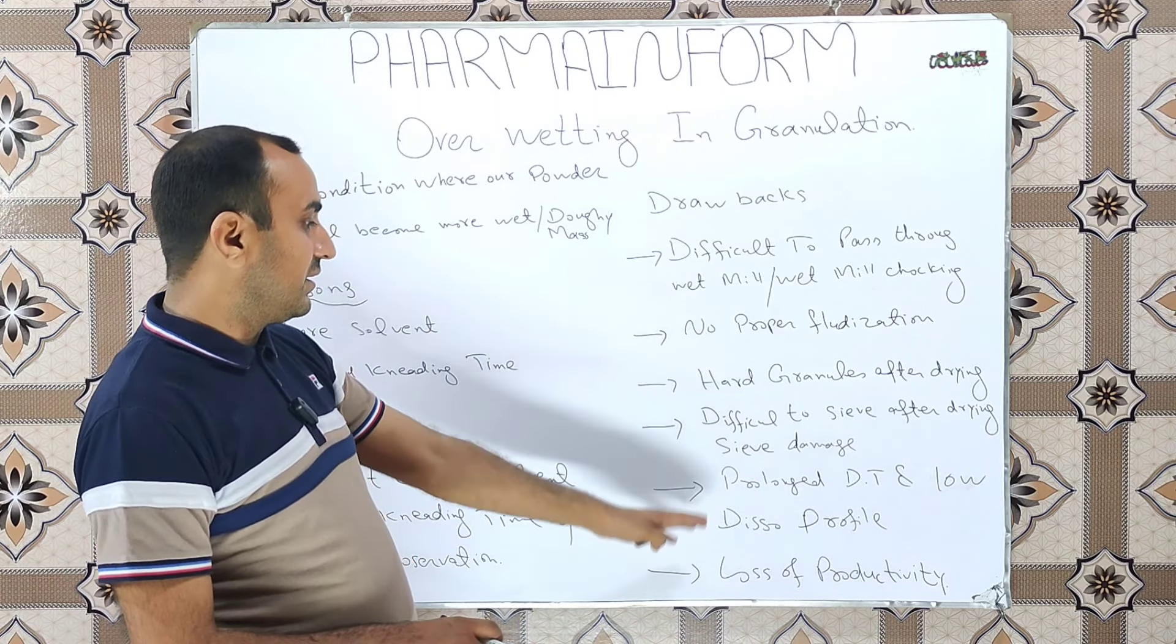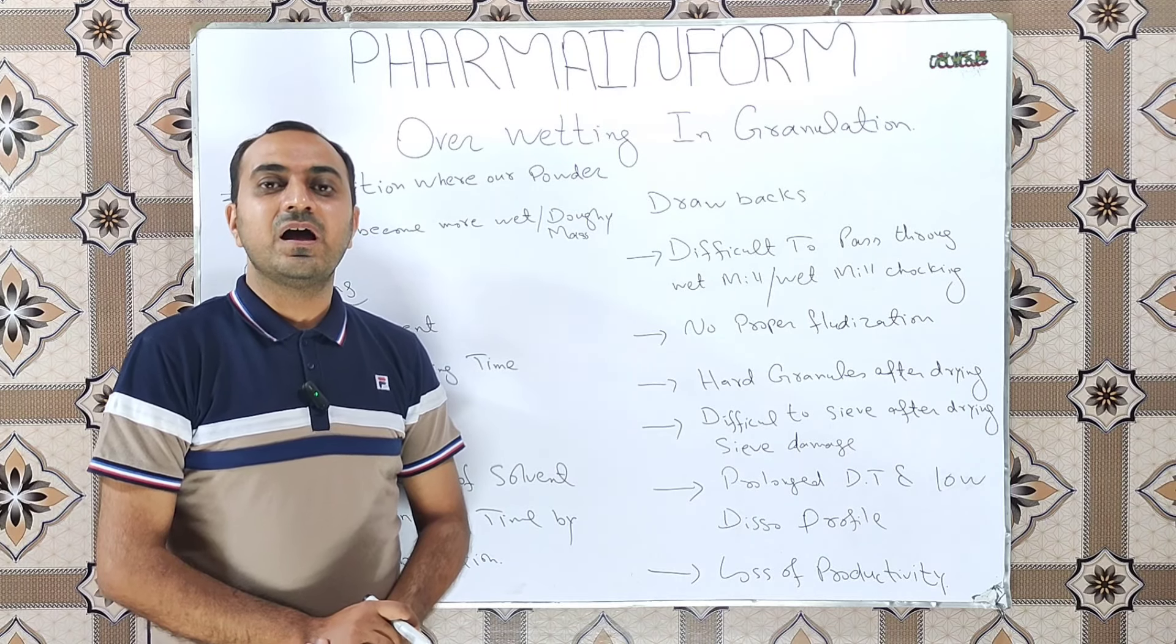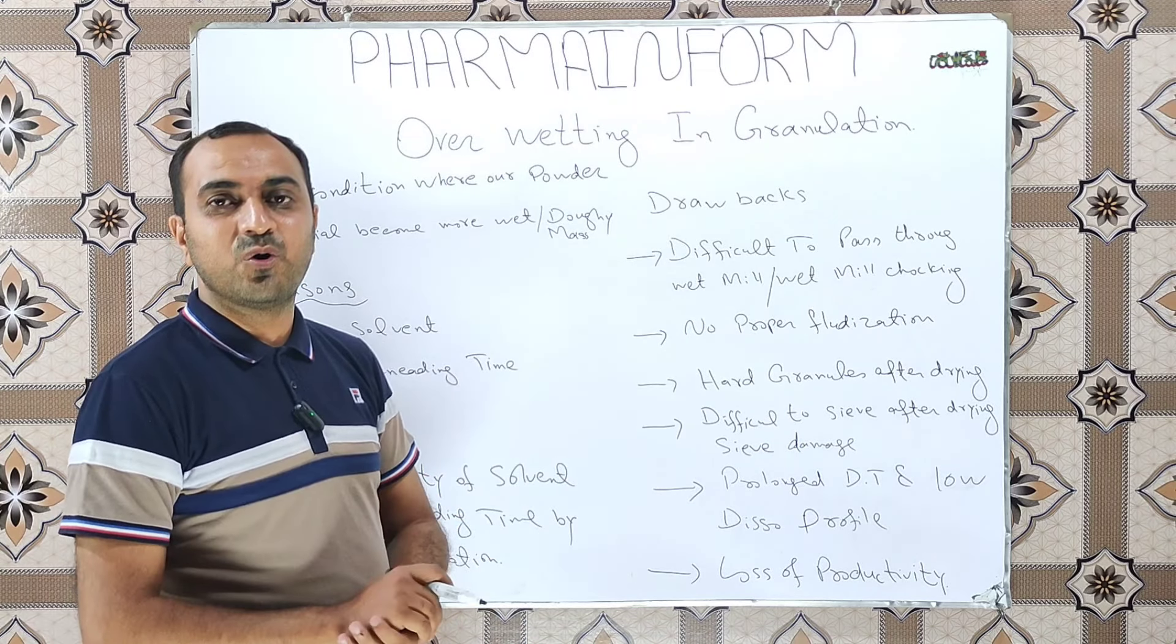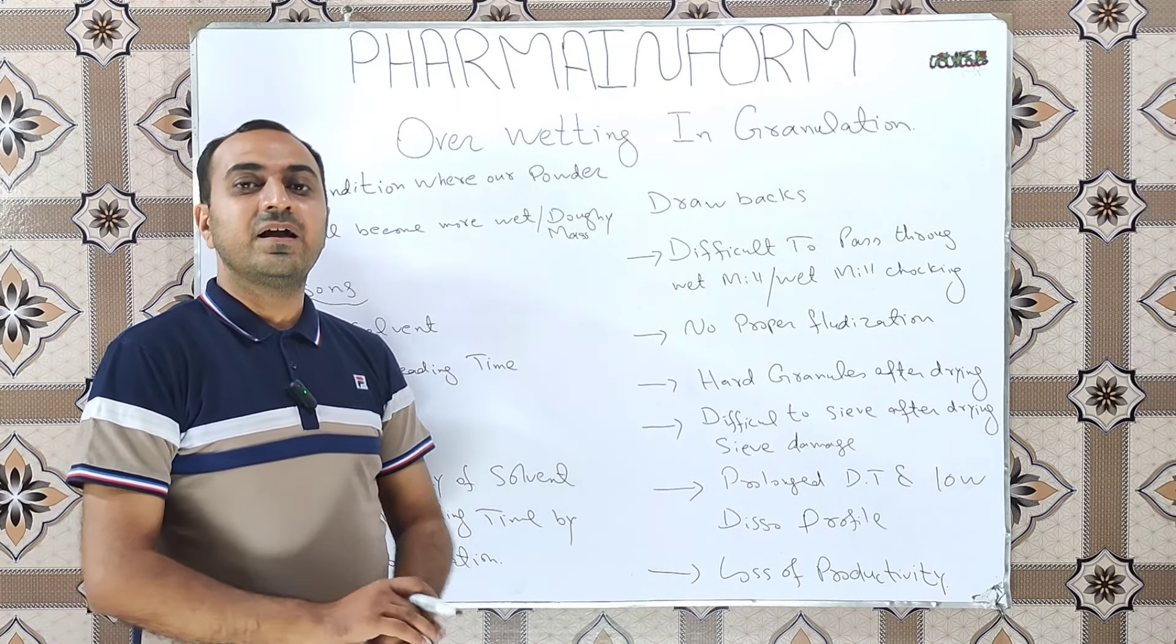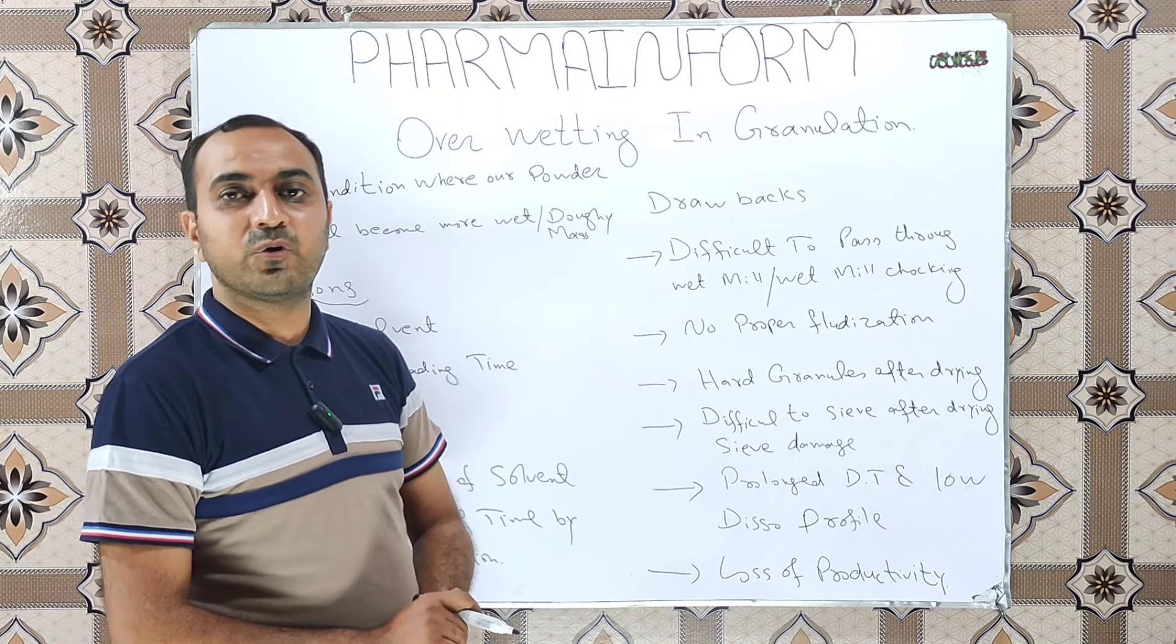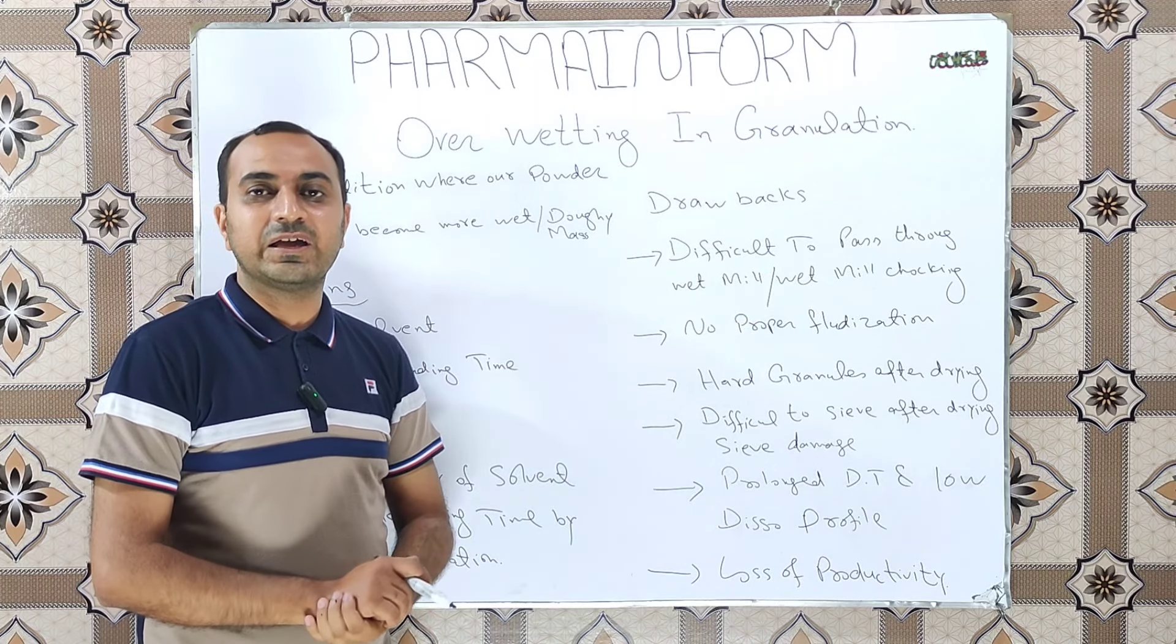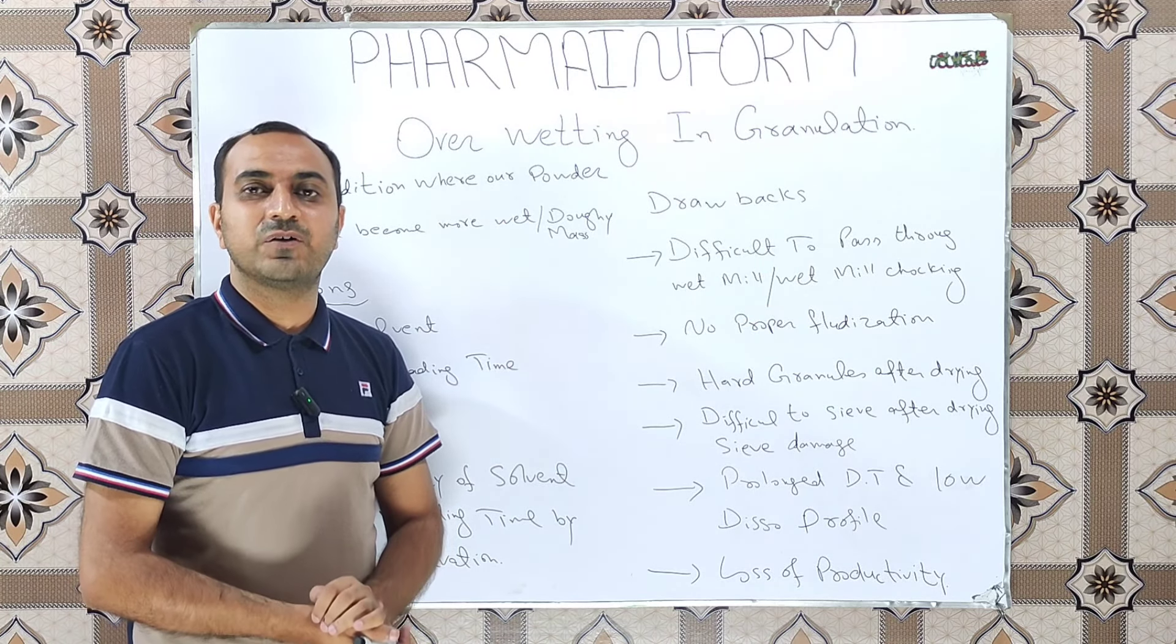The next defects are related to disintegration time and dissolution profile. Hard granules' disintegration time is prolonged, and we are familiar that if disintegration time is prolonged, the dissolution profile is low. All these drawbacks result in loss of productivity and increase in operational cost. So always try to prevent overwetting by carefully observing the kneading stage or wetting step of wet granulation.